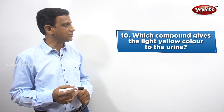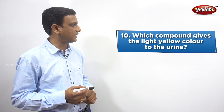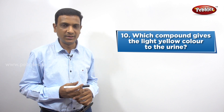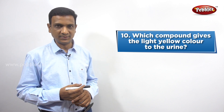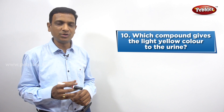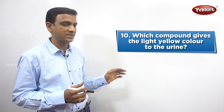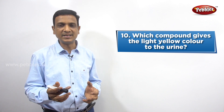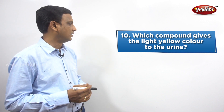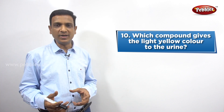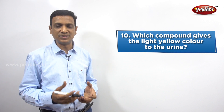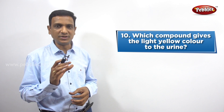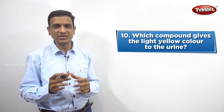The next question: which compound gives the light yellow color to the urine? Urine has a specific pale yellow color. This color is due to the presence of some substance. Urine consists of water and many minerals and things filtered from the blood, but it contains one particular compound which gives that specific color.